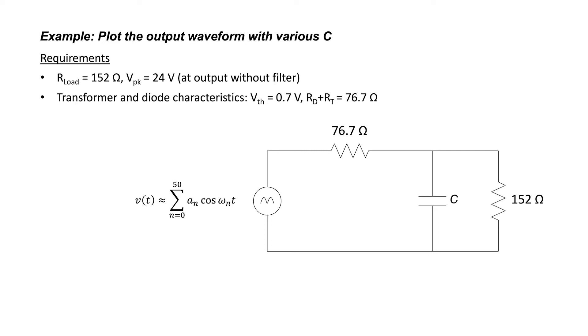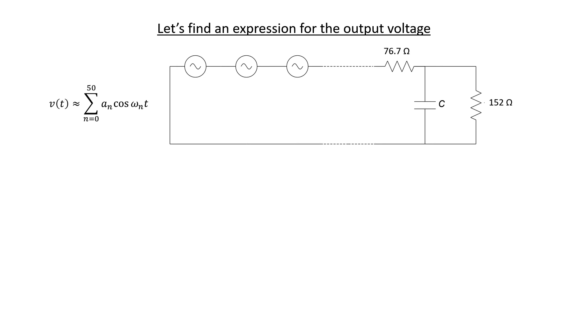We're going to plot the output waveform with various capacitor choices. How are we going to do that? Well, we already have an expression for our input voltage. We're going to be using superposition in order to find the voltage at the output.